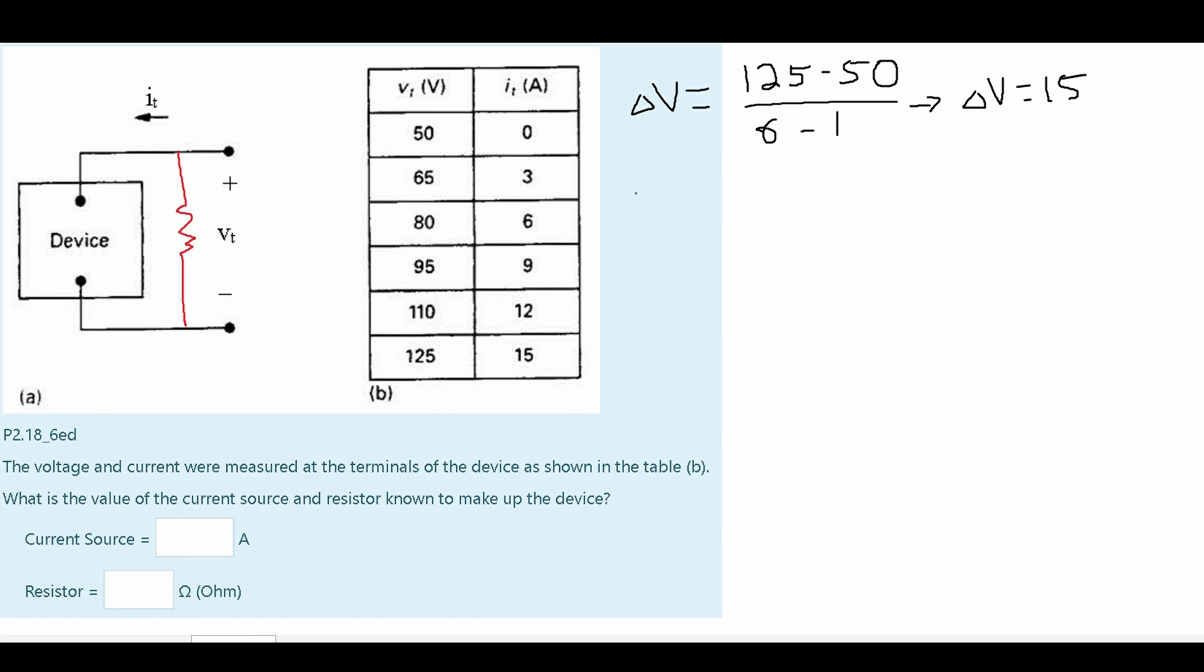Now we're going to calculate the change in our current. And the change of our current is the same thing. We're using the slope formula, so we have our largest part, which is 15, minus our smallest part, which is 0. And we're going to do 6 minus 1, since we have 6 and we're starting at 1. If we do this, we're going to get 15 over 5, or that our change in current is equal to 3.